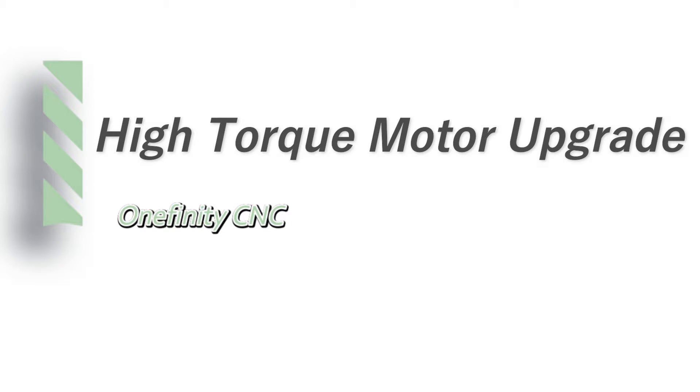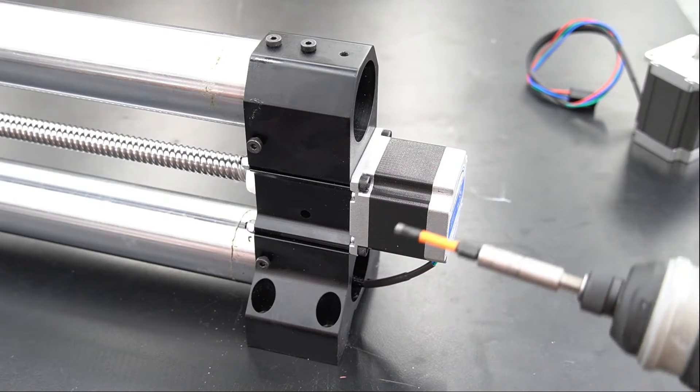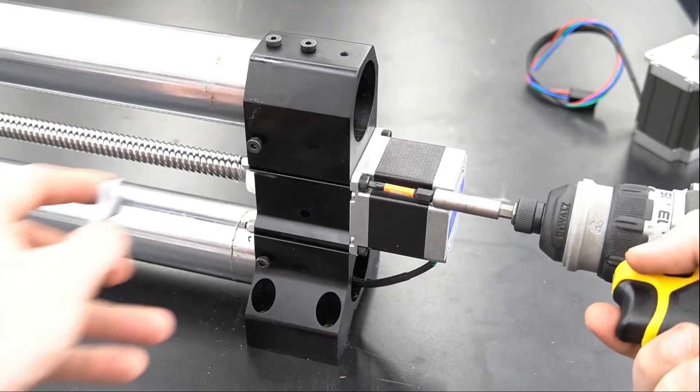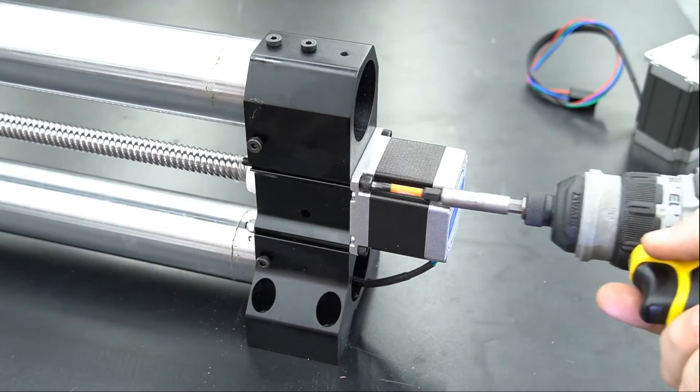Installing the high torque stepper motor upgrade on the Onefinity CNC. The first thing we'll need to do when we swap out our motor is remove the bolts and nuts holding the motor to the end of the rail.